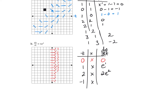When T equals negative 1, the slope is negative e to the negative 1—a fairly flat negative slope of about negative 1 over 2.71. I'll draw every other one. When T equals negative 2, the slope is negative 2e to the negative 2—a little bit flatter than the previous line. You can see the pattern forming.